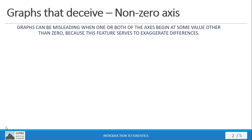In the previous mini lectures we've considered effective ways to communicate data. Now we're going to examine some ways in which data can be communicated deceptively. Not every instance of deceptive communication is done intentionally — many exist out of simple ignorance. Others are performed intentionally because people want to promote a particular agenda.